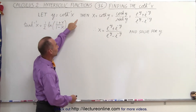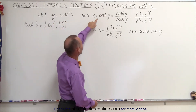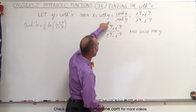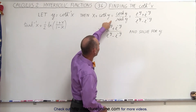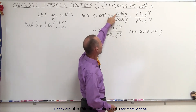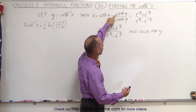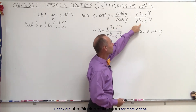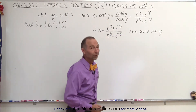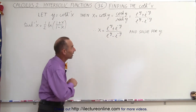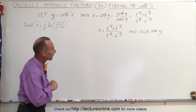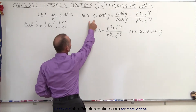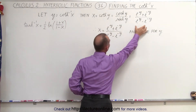And because of that, we know that x therefore is equal to the hyperbolic cotangent of y, defined by the hyperbolic cosine over the hyperbolic sine, which then can be put into terms of the exponentials. And then we can say that x therefore equals this.